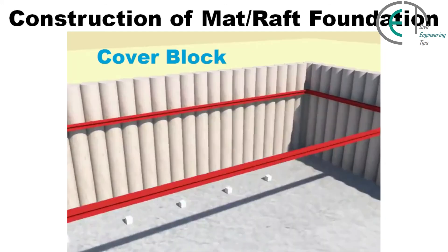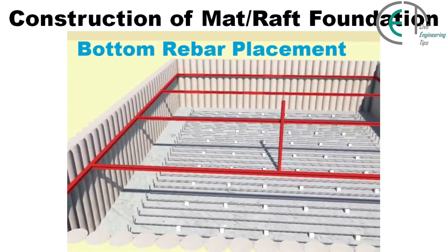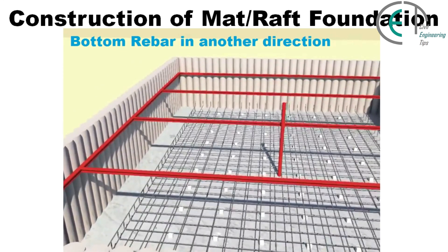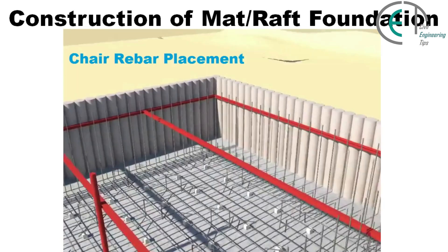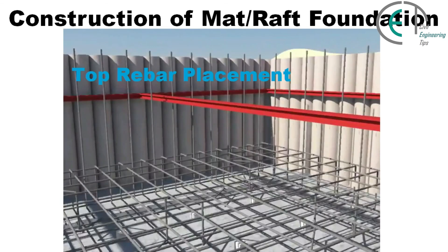After that, it's time to place the rebars. Before rebar placement, we have to place cover blocks to maintain clear cover. Then we place the bottom rebar in one direction and the bottom rebar in another direction. Before top rebar placement, we have to place the chair rebar. When chair rebar placement is complete, we are ready to place the top rebar.